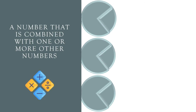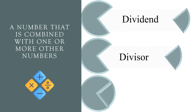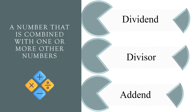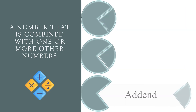A number that is combined with one or more other numbers. Dividend, divisor, or addend? The correct answer is addend.